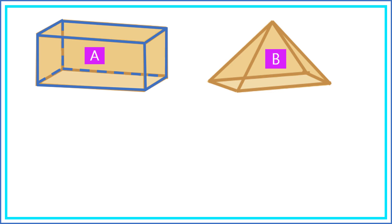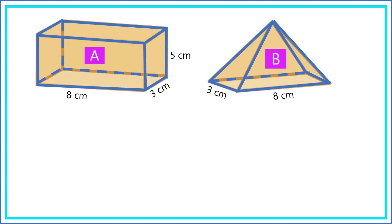This is a rectangular pyramid. We call it a rectangular pyramid because the base is in the shape of a rectangle, and all other surfaces are triangles. These two solid figures have three dimensions: length, width, and height. For this rectangular prism, the length is 8 centimeters, the width is 3 centimeters, and the height is 5 centimeters. The rectangular pyramid has the same dimensions: length 8 cm, width 3 cm, and height 5 cm.